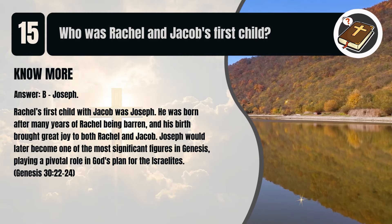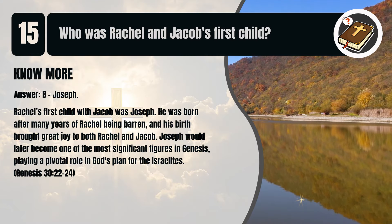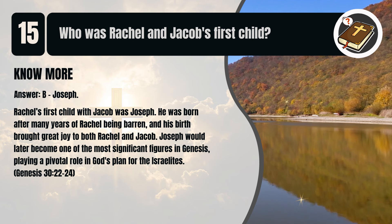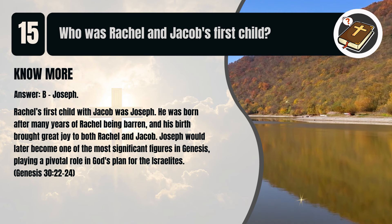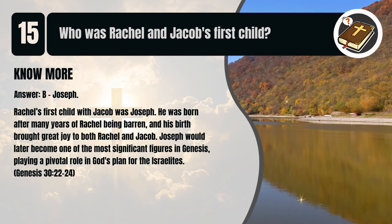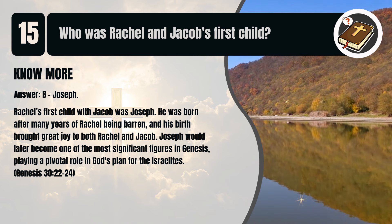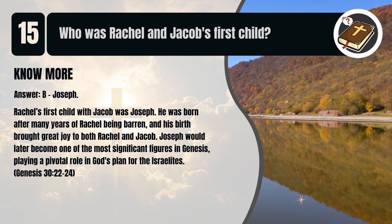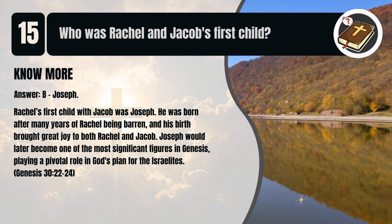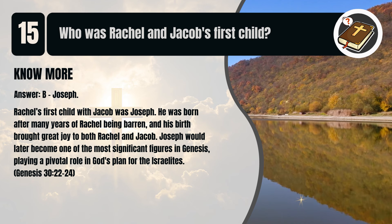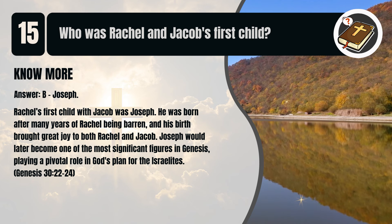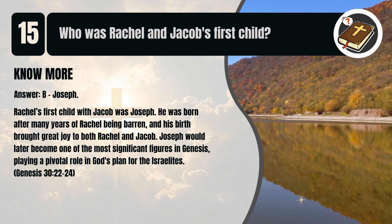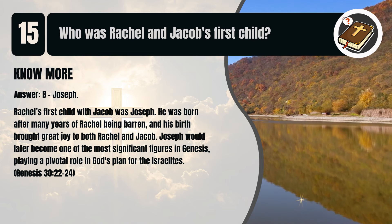That's B. Joseph. Rachel's first child with Jacob was Joseph. He was born after many years of Rachel being barren, and his birth brought great joy to both Rachel and Jacob. Joseph would later become one of the most significant figures in Genesis, playing a pivotal role in God's plan for the Israelites. Genesis chapter 30 verses 22 to 24.